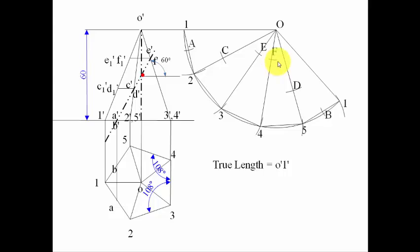The development is almost done with a few final touches. Join all the section points with straight lines: A to C, C to E, E to F, F to D, and D to B.